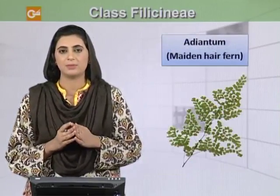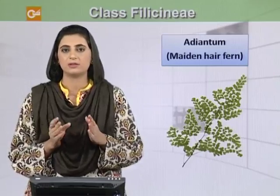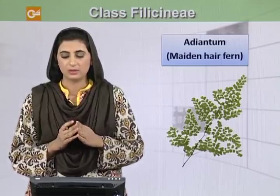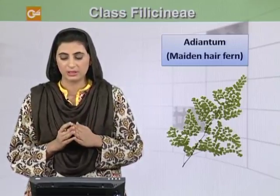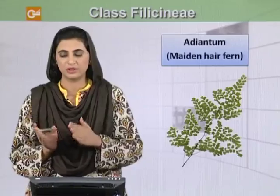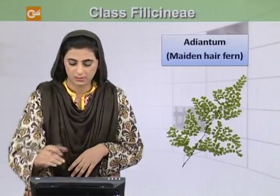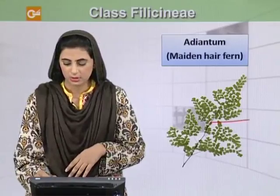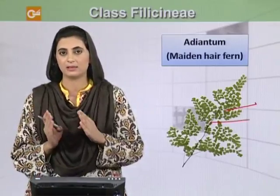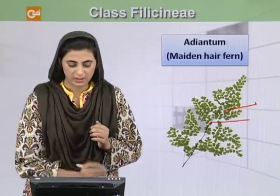One important example of ferns is Adiantum, which is also called the maidenhair fern. It is called maidenhair fern because its rachis is black, smooth, and shiny. As you can see here, the stalk and the rachis is black, silky, shiny, and smooth.